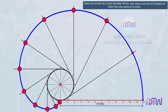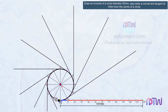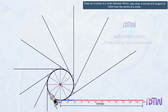Take a compass, take the length from point 1' to P, and using point 1 as a reference, mark an arc on this line. Name this point as P1. Next, take the length from point 2' to P, and using point 2 as a reference, mark an arc on this line. Name this point as P2.